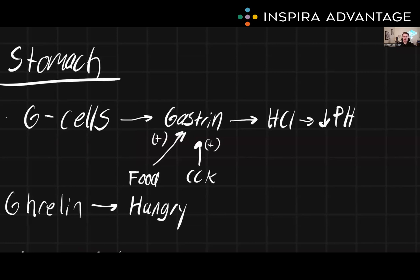Gastrin levels in the body are regulated by a number of different factors. The presence of food in the stomach and duodenum, particularly protein, will stimulate the release of gastrin, which makes sense. If we have a lot of protein in the stomach, we want to break that down into peptides. And by increasing the amount of hydrochloric acid, we'll increase our amount of pepsin and thereby be able to break down more proteins.